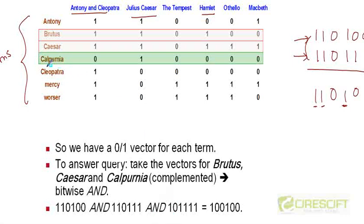And if we take the complement of Calpurnia vector which will be 1 0 1 1 1 1 and we AND these three vectors or we know, we already know the result of ANDing these two vectors.